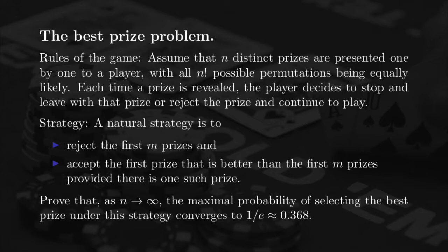A natural strategy the player can follow is to fix an integer M, which is strictly less than N, the number of prices. The player rejects the first M prices. Then, after she sees the first M prices and knows their values, she continues playing and accepts the first price after those first M that is better than all of the first M prices she saw.